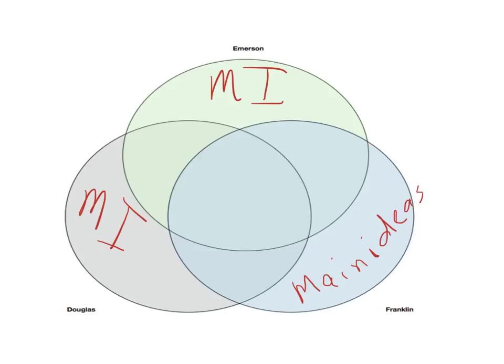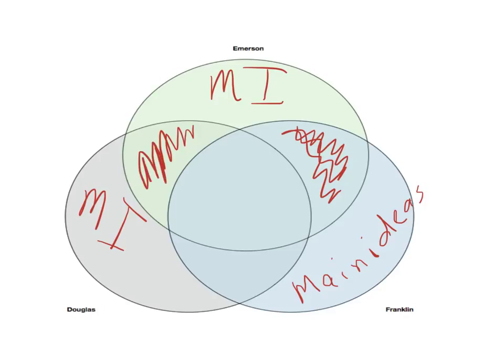Then the interesting part begins. As a whole class, they're going to look at what commonalities exist between Emerson and Franklin — where do they agree? — and that information goes in that overlapping part of the Venn diagram. Similarly, between Emerson and Douglass, where do they agree? That goes in that part. And between Douglass and Franklin, where do they overlap? That goes in the corresponding section.